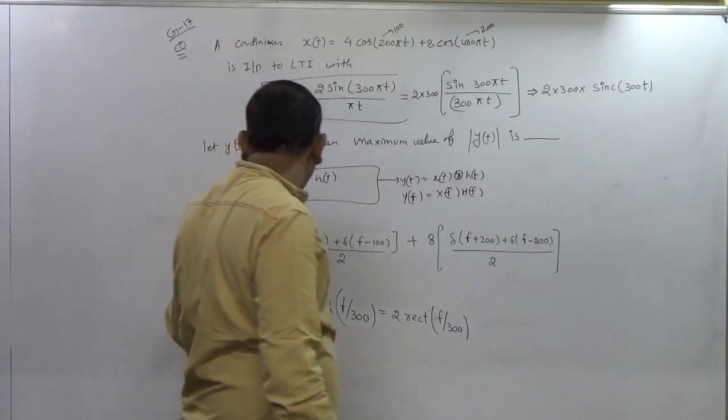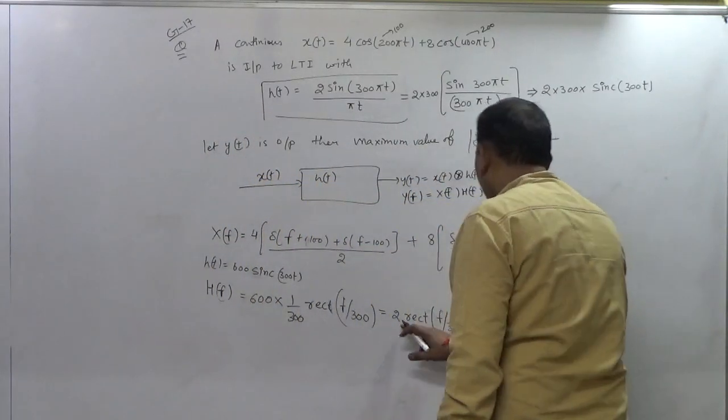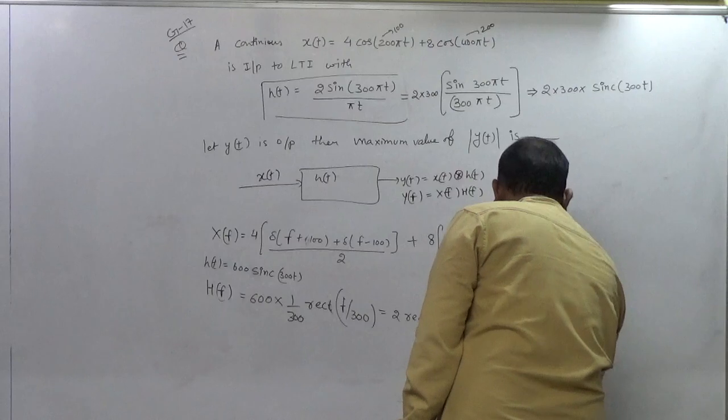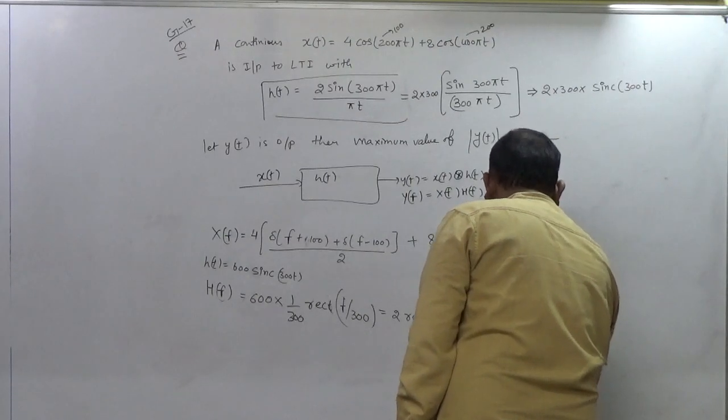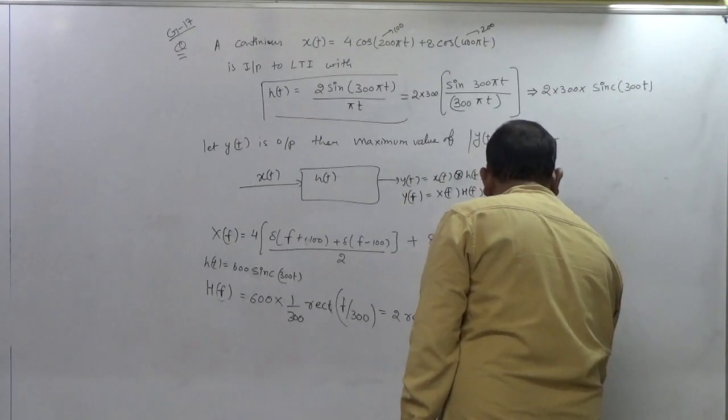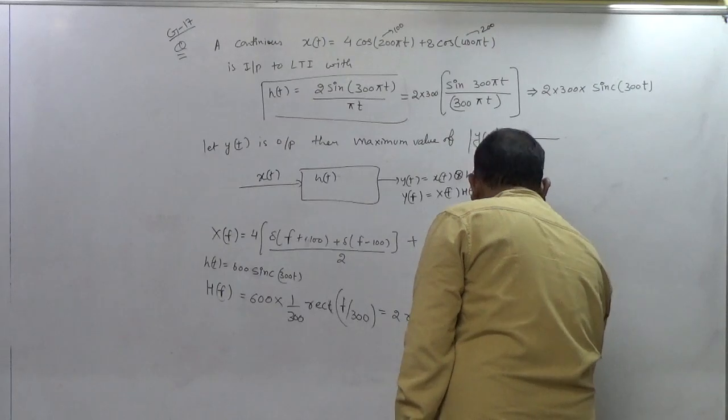So when we make the diagram of this Hf, what will it be like? Because it is a rectangular function. This is a rectangular function, its amplitude is just 2 and its limits, basically the limit of the rectangular function is minus 1/2 to 1/2.